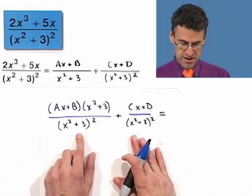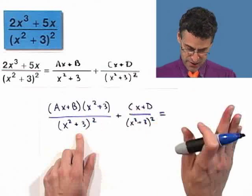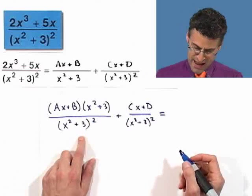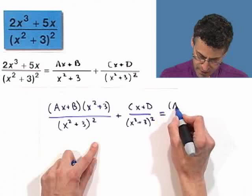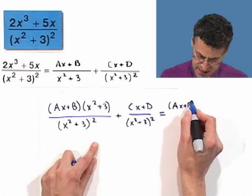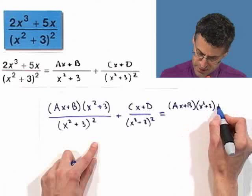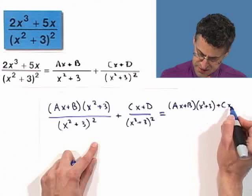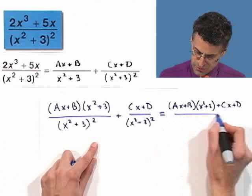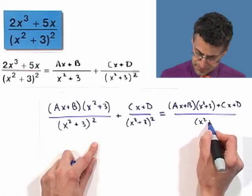So since we have a common denominator, we can just literally just add the tops. And so by adding the tops, we see Ax plus B times x squared plus 3 plus Cx plus D, all over that common bottom.